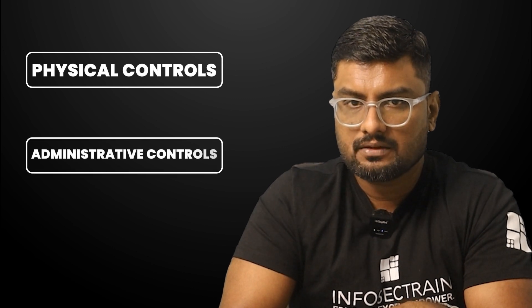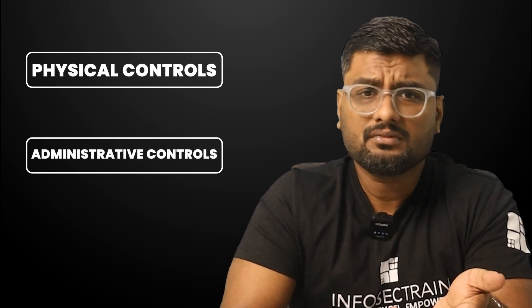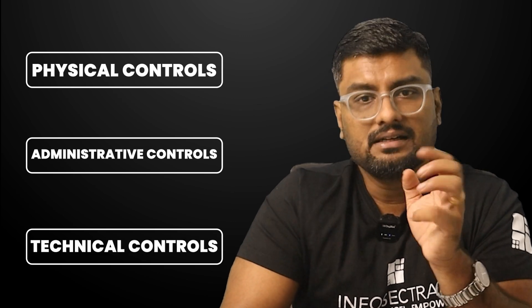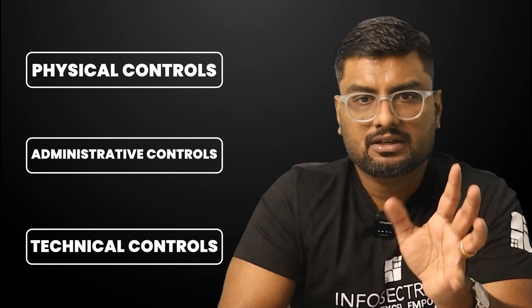So, three categories of controls: physical — something you implement physically; administrative — all about day-to-day operations, rules and regulations; and technical — something you implement technically to block technical threats. Do watch the next video where I'll cover seven types of control functions. Subscribe to the channel and click the bell icon so you don't miss future videos. Good day, bye!